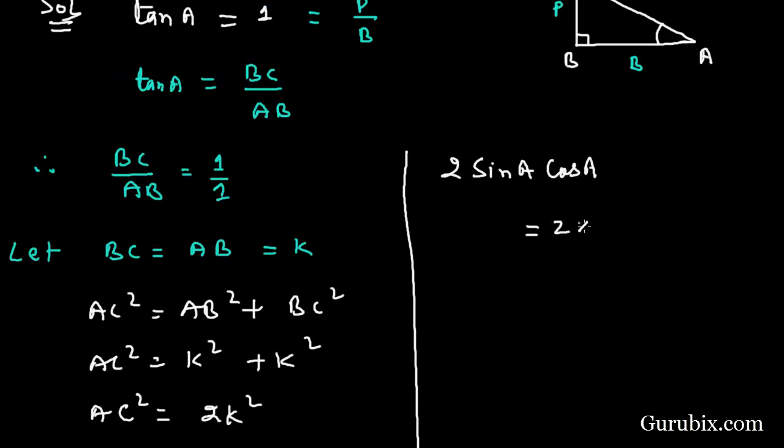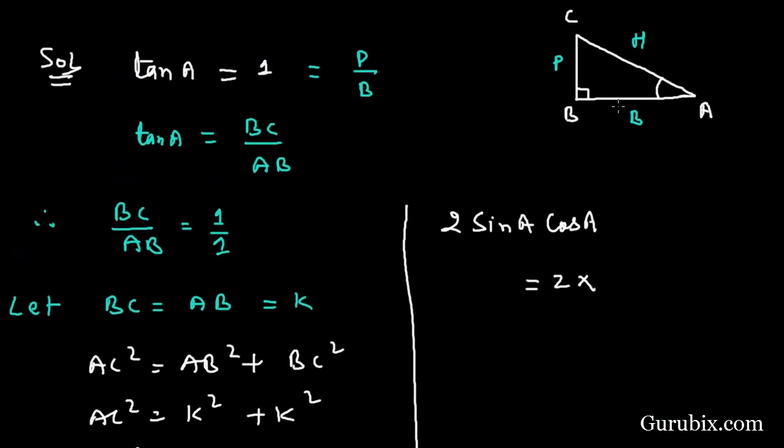We know that sin A equals perpendicular upon hypotenuse. Perpendicular is K. Hypotenuse is square root of 2K.